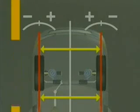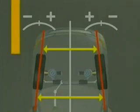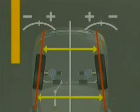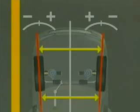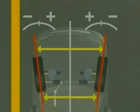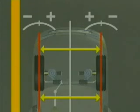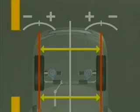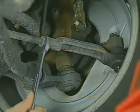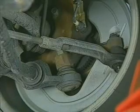Toe is positive, or toe in, when the front of the tires are closer together than the rear of the tires. Toe is negative, or toe out, when the rear of the tires are closer together than the front of the tires. Zero toe occurs when the wheels are parallel. Toe is adjusted with the tie rod end adjusters. The steering wheel can also be centered using this adjustment.